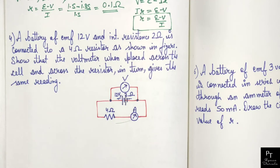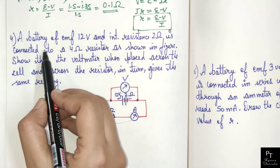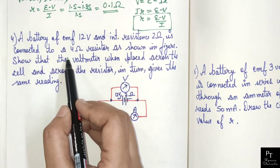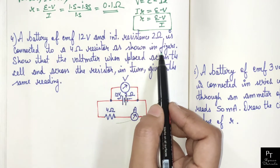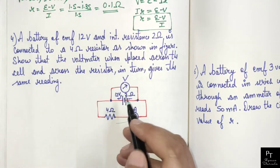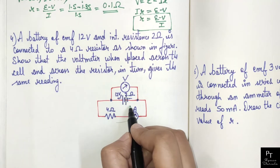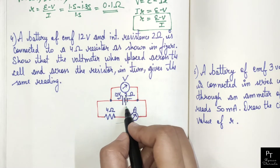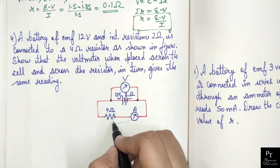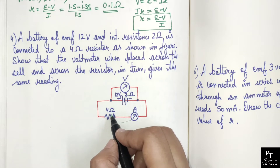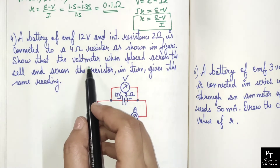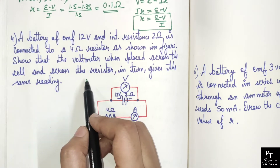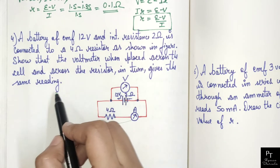Now moving to the fourth problem. A battery of EMF 12 volt and internal resistance 2 ohm is connected to a 4 ohm resistor as shown in the figure. In this circuit we have a battery of EMF 12 volt and internal resistance 2 ohm connected with a resistor of 4 ohm. Show that the voltmeter, when placed across the cell and across the resistor in turn, gives the same reading.